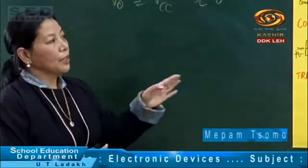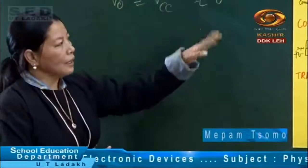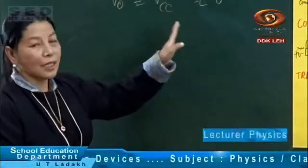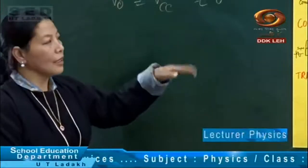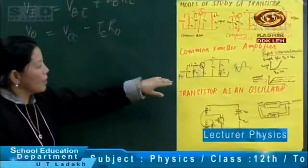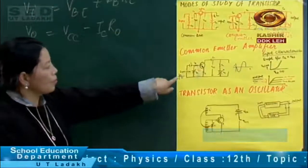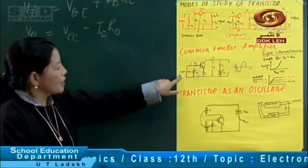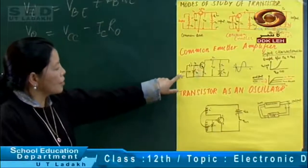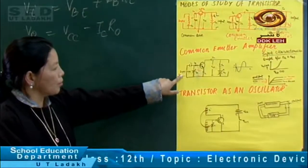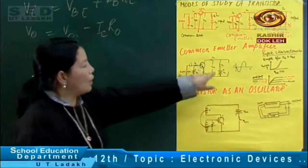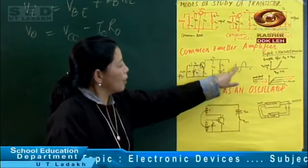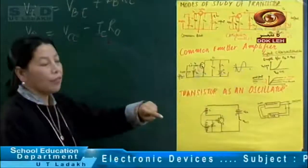Yesterday we discussed the gain, and today we will see the gain. In the amplifier circuit, we had an input voltage signal which is low in amplitude, and the output we got in the amplified form.